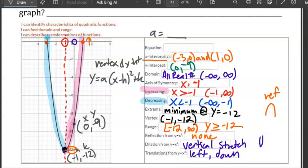We plug them in to find a. So we plug those in. We get negative 9 equals a(0 - negative 1)² + negative 12.